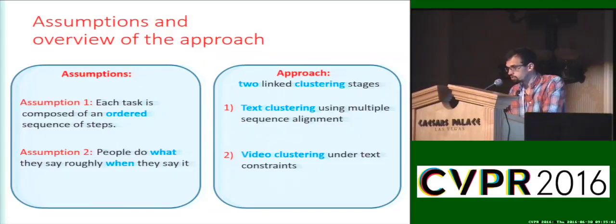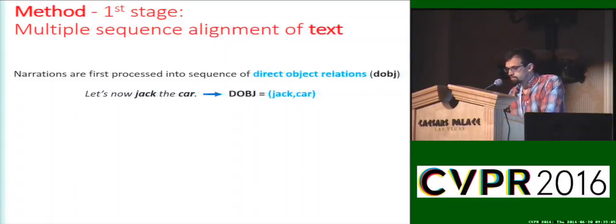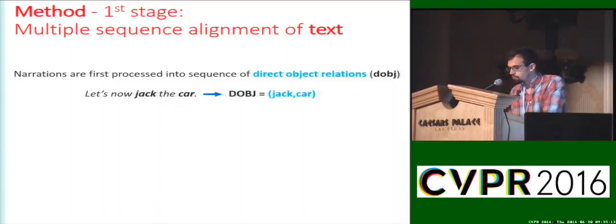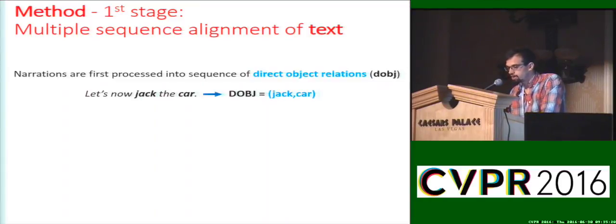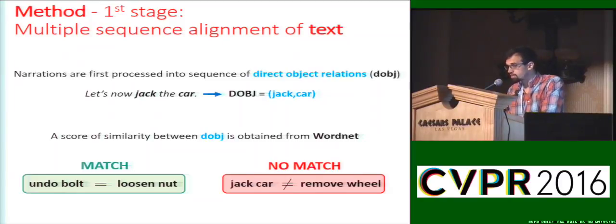I will now describe those two stages. First, we preprocess the input text sequences into a sequence of direct-object relations. Direct-object relations are represented as a pair of a verb and a noun in direct-object relation with the verb. For example, in the sentence 'let's now jack the car,' the direct-object relation will be 'jack car.' We then define a similarity score between direct-object relations using WordNet. This allows us to match pairs of direct-object relations, which is crucial to globally align all sequences together.